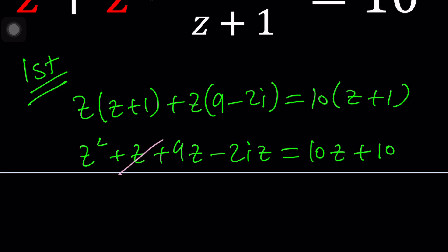Now let's simplify. 9z plus z is 10z, so this cancels out. I got stuck on Gen Z. And from here we get a simple quadratic equation. Let's bring the 10 over here: z squared minus 2iz minus 10 equals 0.